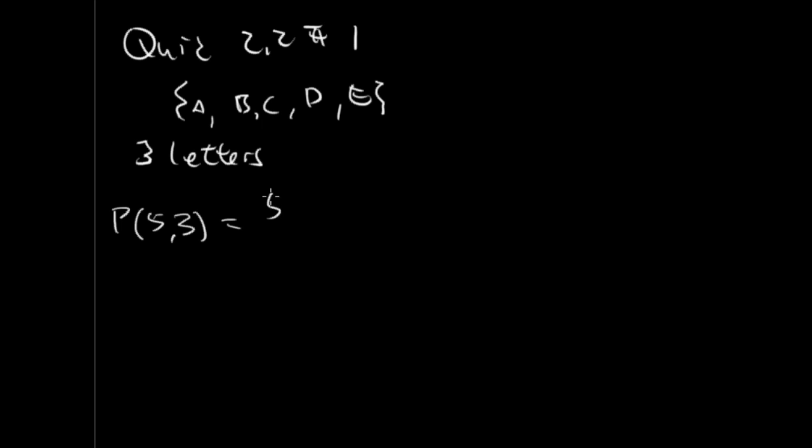Now we just use the formula, so 5 factorial, and then 5 minus 3 factorial on the bottom. So this is going to be 5 times 4 times 3 times 2. And the bottom is 2 factorial, which is just 2, cancel out, so that comes out to 60.